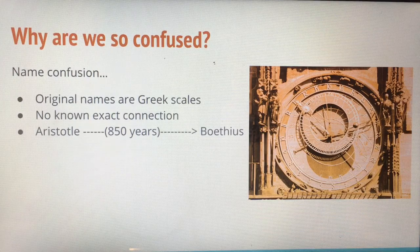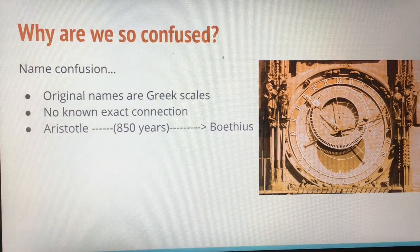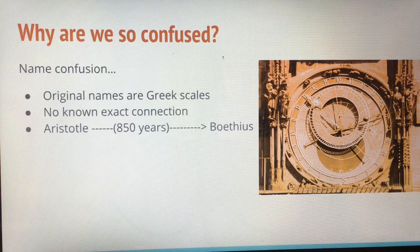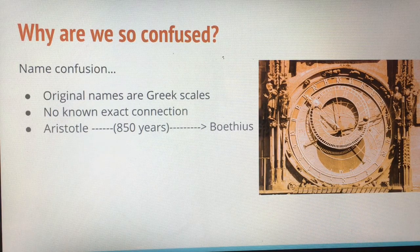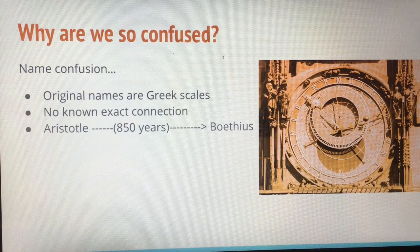There is a serious bit of name confusion happening. The original names are from the original Greek scales. However, no one knows the exact connection between which notes were in the original Greek scales and which name scale they belong to. The work of Aristotle was 850 years before the philosopher Boethius began actually putting together this information to share with us today.